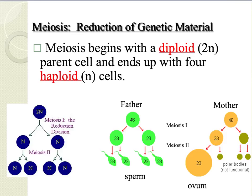Remember, meiosis begins with a diploid number of chromosomes and ends up with four haploid cells containing half of the chromosomal number. For example, in human cells we start with 46 and we end up with 23 chromosomes in each sperm and also in each ovum.